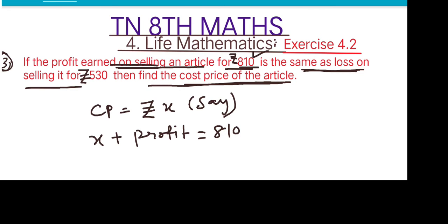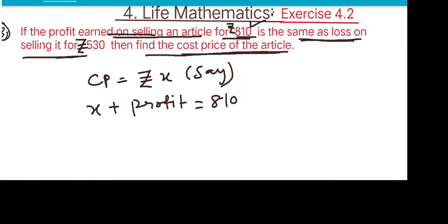In the second case, CP minus loss equals selling price. So x minus loss equals rupees 530.